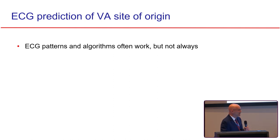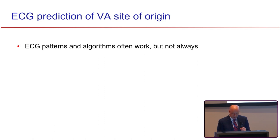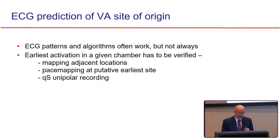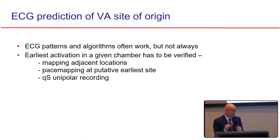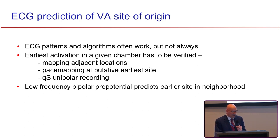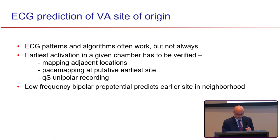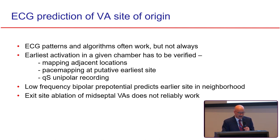In summary: ECG patterns and algorithms are valuable for understanding anatomy and ECG correlation, but they don't always work. Earliest activation in a given chamber has to be verified—by mapping adjacent locations, pace mapping for a perfect match, or looking at a QS unipolar recording. A low-frequency bipolar prepotential predicts that you're not at the right spot—the right spot is somewhere close in another chamber or nearby. Exit site ablation of mid-septal ventricular arrhythmias should not be expected to reliably work.